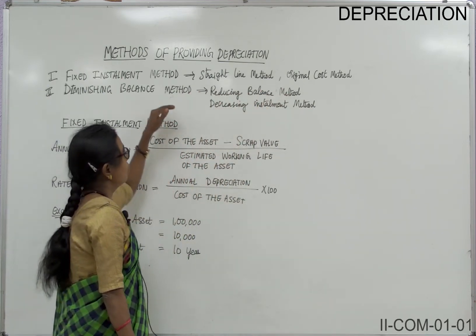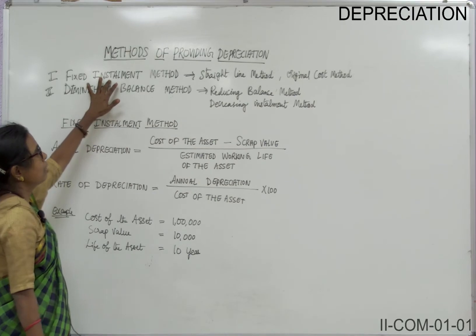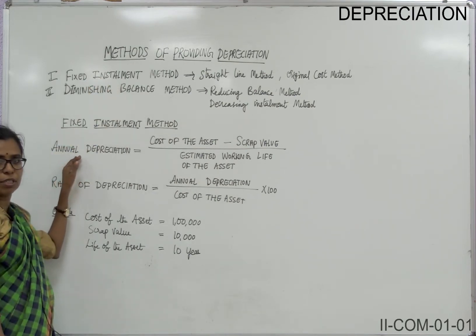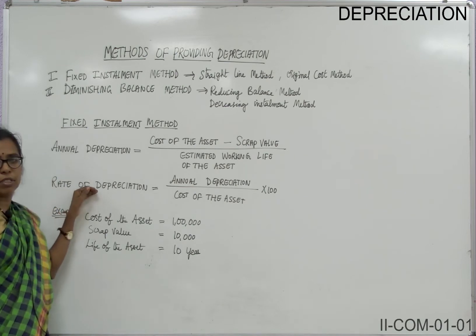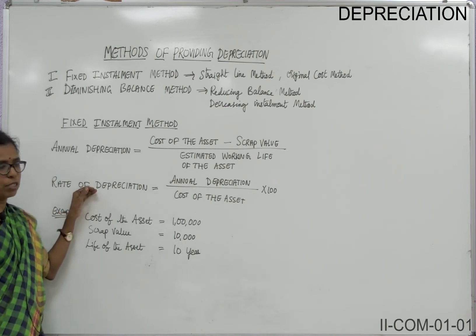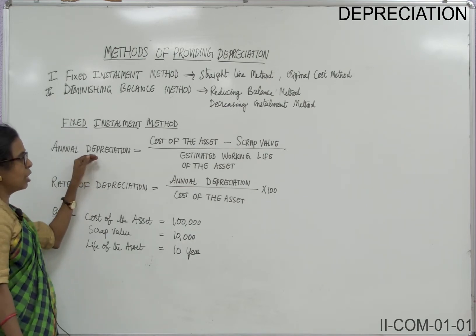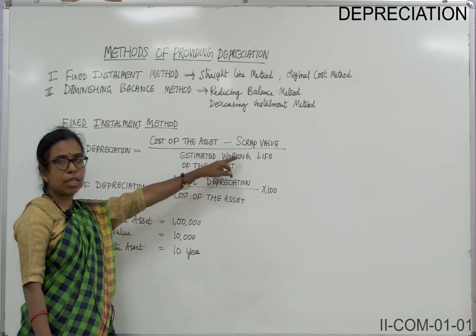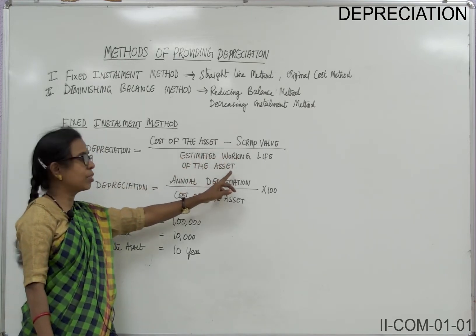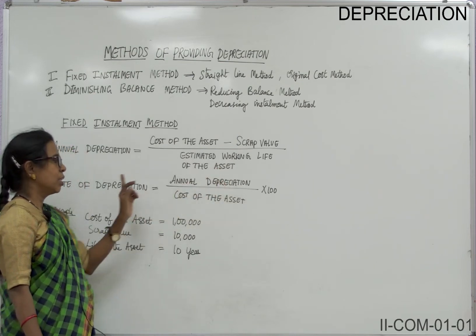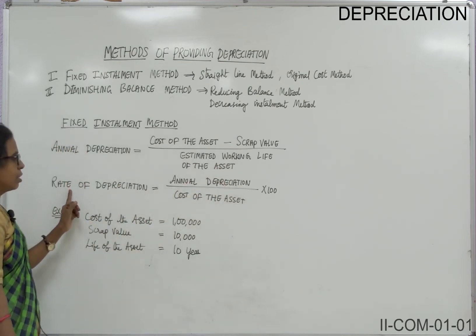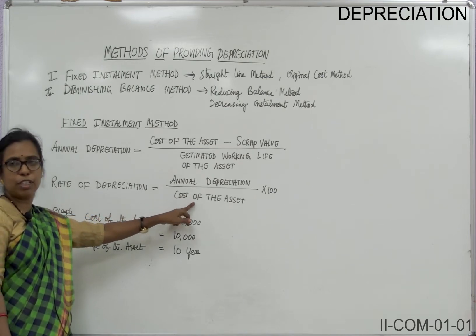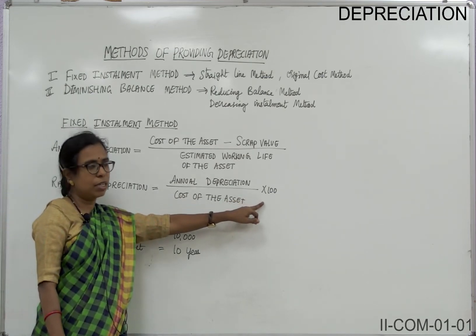While calculating depreciation in the fixed installment method, you have two formulas. The first is for annual depreciation and the second is for rate of depreciation. To find annual depreciation: cost of the asset minus scrap value, divided by estimated working life of the asset. Rate of depreciation equals annual depreciation divided by cost of the asset, multiplied by 100.